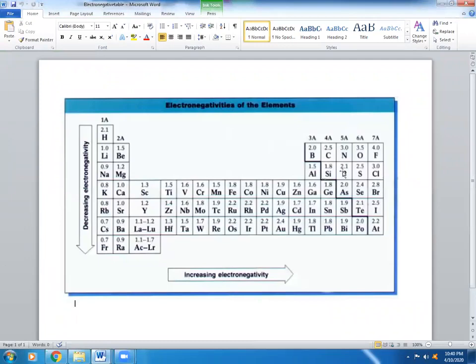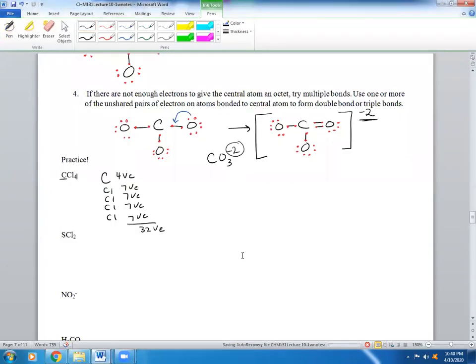Anytime you see C, it's always your central atom. So here it is, Cl is more electronegative at 3, C is 2.5. So let's begin. Put C in the middle, attach to Cl, Cl, Cl.